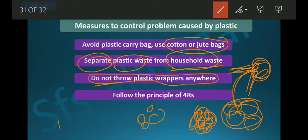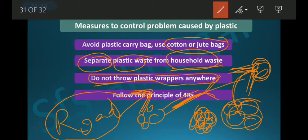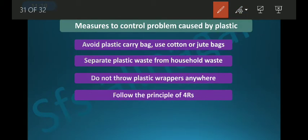Before throwing in the garbage, separate plastic on one side and biodegradable household waste on the other side. Also, do not throw plastic wrappers on the road — if thrown on the road they will get stuck in drain pipes, choke the drainage system, block water flow, and cause flood-like situations.